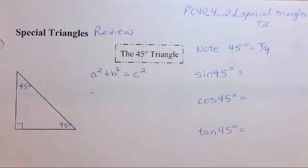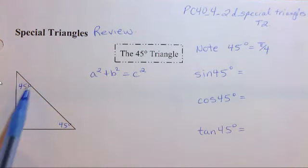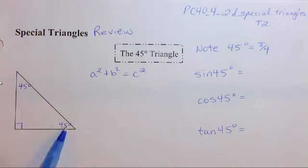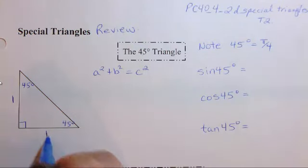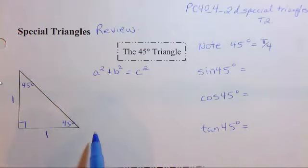All right, so this is what the notes look like. We've got the 45 degree, 45 degree, and 90 triangle here. Now why don't we let each side length equal one, so you can imagine that it was a square and each length was one and we just cut it in half. This is what we end up getting.